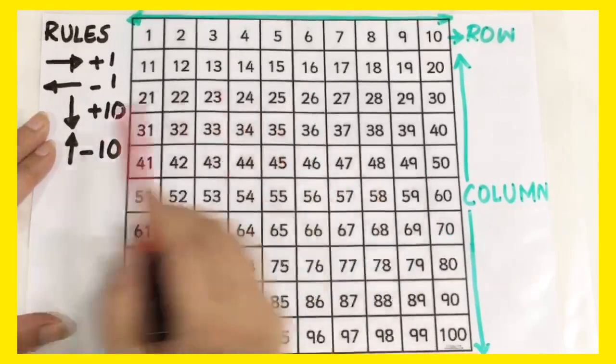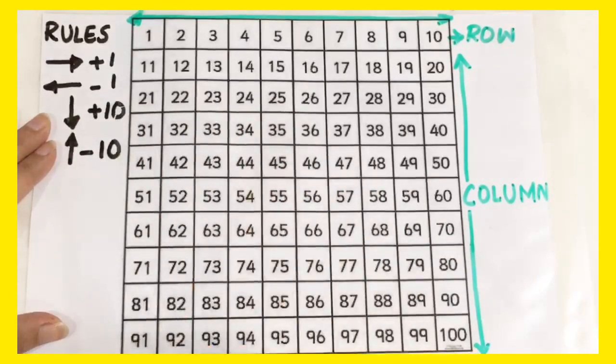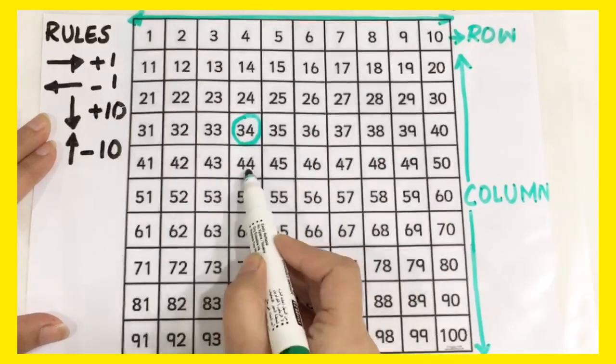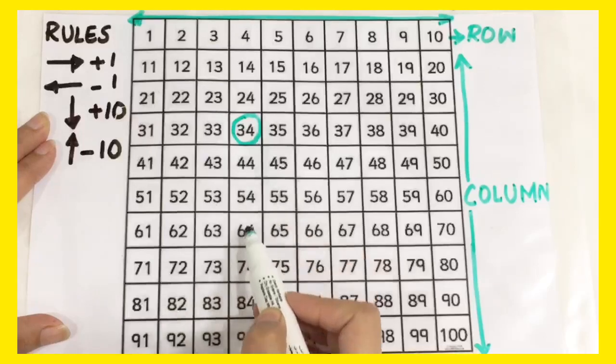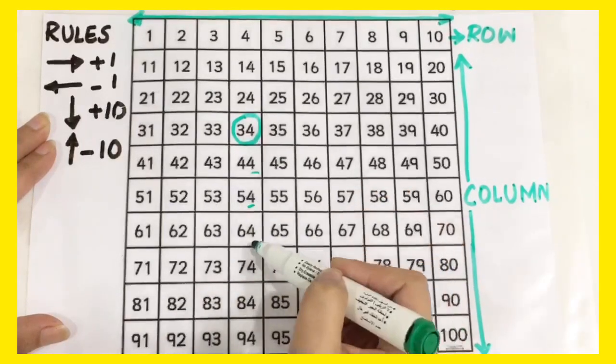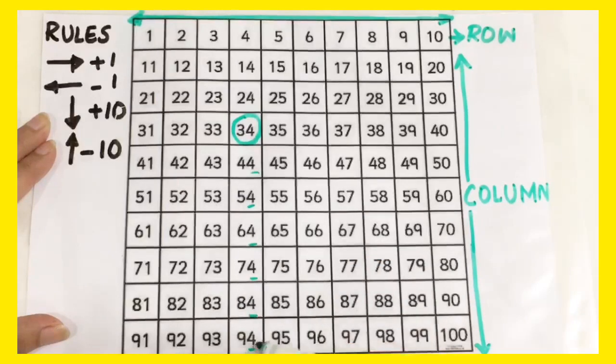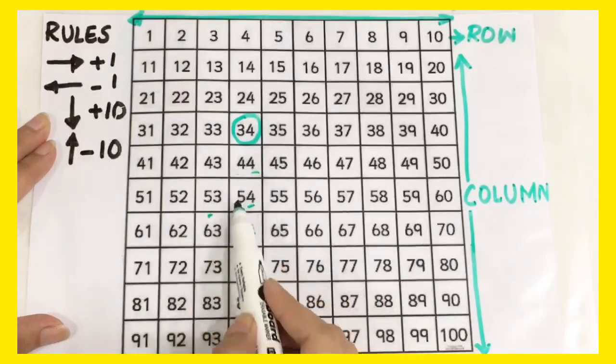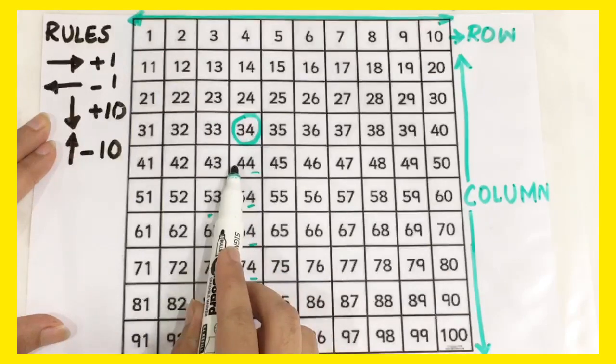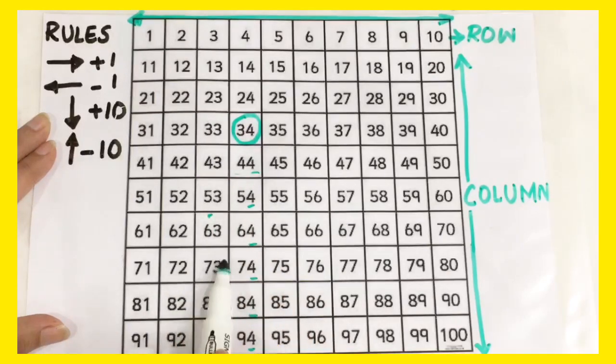Now let's take another example. I choose a number in the center of the 100 square chart, that is 34. Now I will see that the numbers present below 34 have 4 digits in the unit place. Whereas the numbers on the tenth place are increasing, after 3 we get 4, 5, 6, 7, 8 and 9.